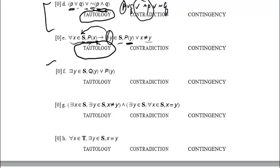The next statement says: there exists a y in s such that some property holds for that y. I don't really know anything about q(y) or p(y), because I don't know anything about q or p. Maybe q is false for every element in s — for example, if s is the set of left-handed people in the class and q means 'y is right-handed,' that wouldn't be true for anyone. So this could be true or it could be false — it's a contingency.